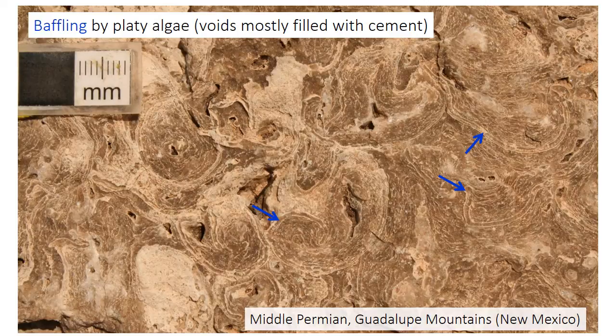Here's a Permian example of a reef where baffling organisms dominated. The spiral, platy features highlighted by blue arrows are platy algae that trapped sediment — the light brown areas — and the void space between the algae was mostly filled with concentric layers of cement.